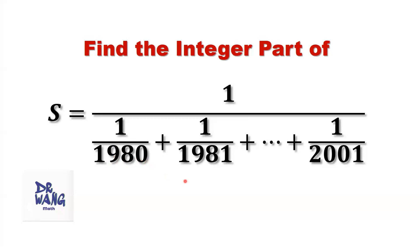Which one is the smallest term? 1 over 2001. This term has the largest denominator, 2001.